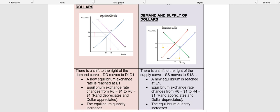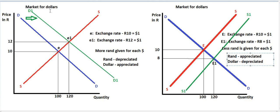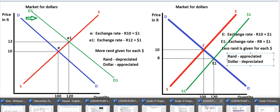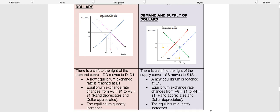There are different ways they can ask this question — data response where they give you a graph to interpret, asking you to draw the graph and explain it for eight marks, or using different currencies like the dollar, pound, or Chinese yuan. They can ask what is going to happen to the value of the rand if the demand for dollars is increasing, or what happens to the value of the rand if the demand for rand is increasing. If they ask about the demand for rand, then it will be the market for rand and your price will be in dollars. You must look very carefully at what is being asked. We are going to practice this in activities because this is something they ask almost every single year — it is very, very important.